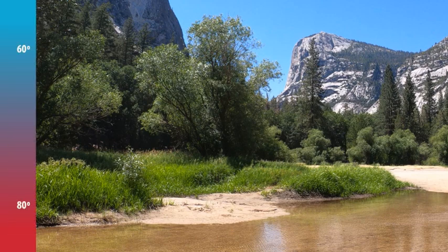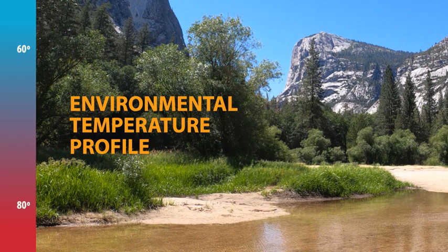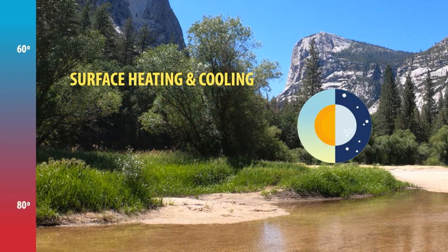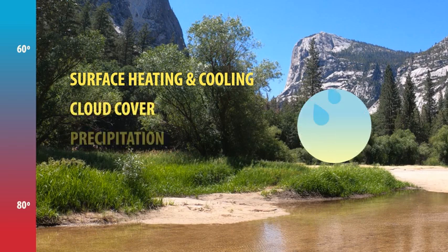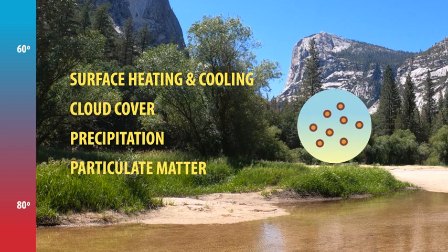Stability or instability is determined by the vertical temperature profile of the atmosphere, which we call the environmental temperature profile. The vertical temperature profile of the environment is controlled by many things: surface heating and cooling, cloud cover, precipitation, particulate matter, among many others.